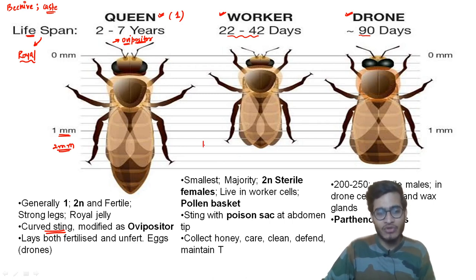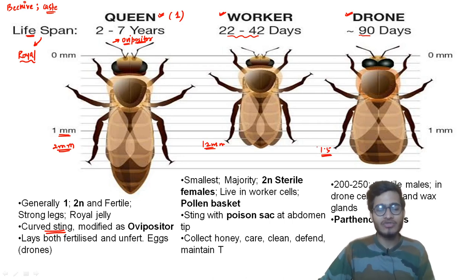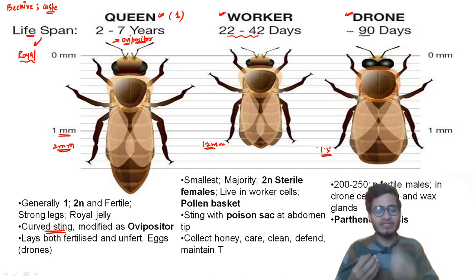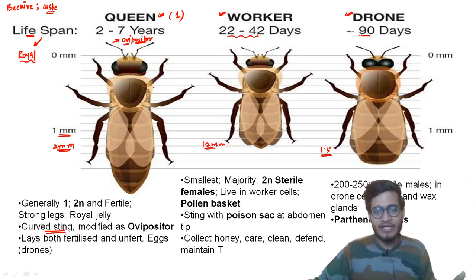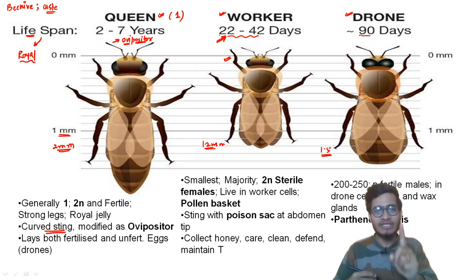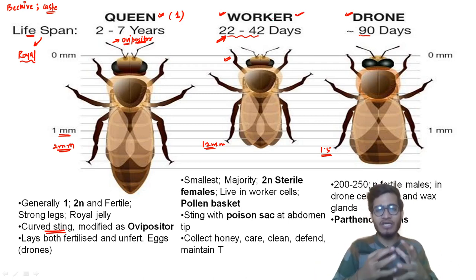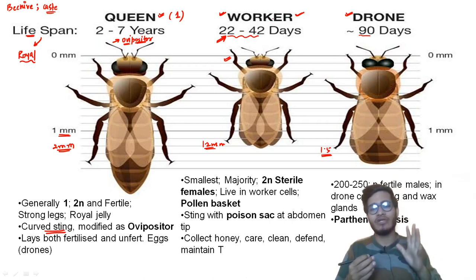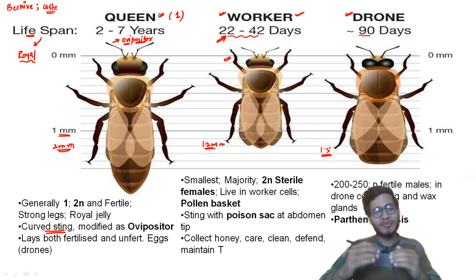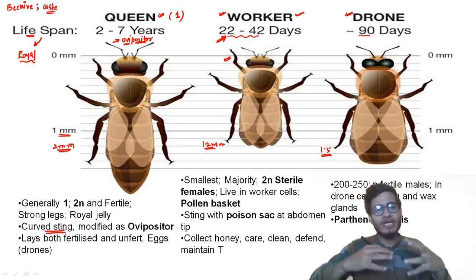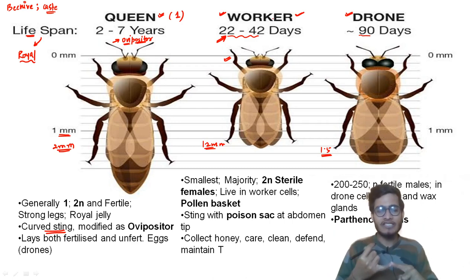Compared to the queen, the worker bee is around 1.2 mm — it is the second largest. Workers are present in the majority; if there are 50,000 bees in a beehive, around 49,500 are workers. They have the worst luck — they work all day, have a very low salary package metaphorically, and their lifespan is quite less. Their size is also smaller.